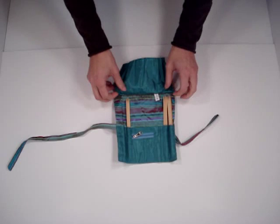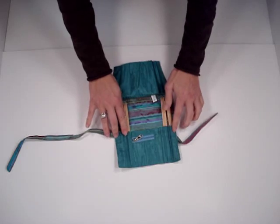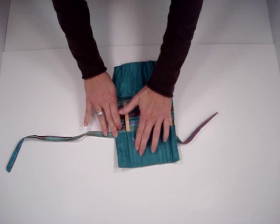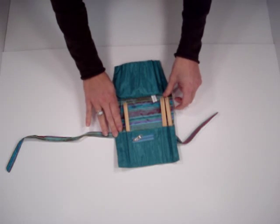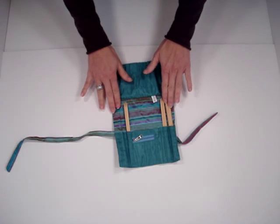It holds up to six inch double points in length. There are six various size pockets on the bottom and then there is a section for stitch markers. You could also use this to store smaller crochet hooks.